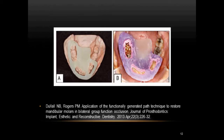An article by Duval Ethel on the application of the functionally generated path technique to restore mandibular molars in bilateral group function occlusion, published in 2013 in the Journal of Prosthodontics, Implant, Aesthetic and Reconstructive Dentistry, describes a modification. Instead of extra-hard base plate wax, they fabricated a stone crib adapted onto the lower cast with particular indentations for accurate placement, which also prevents material from flowing into the oral cavity.